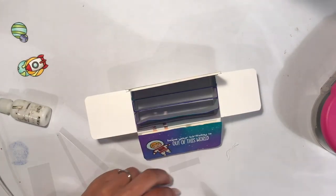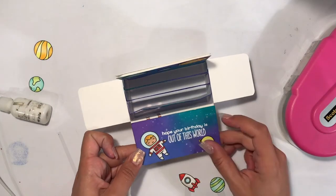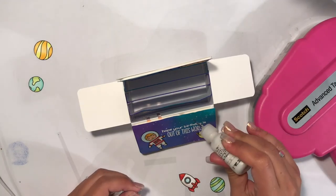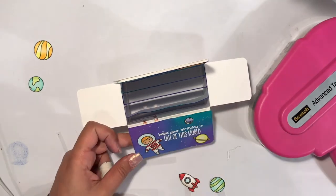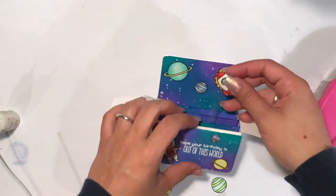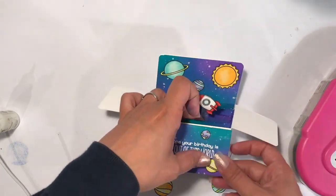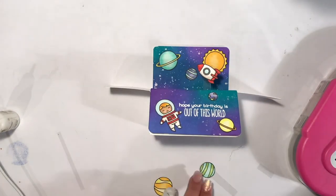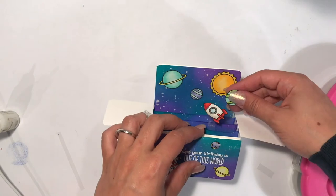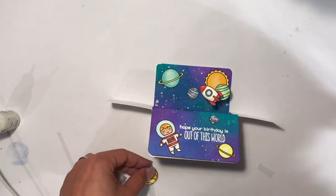To glue down all my images I like to use my ATG gun because I don't really like liquid adhesive. Just for the tiniest planet I'm using my Multi Matte Medium from Ranger. I adhered all the floating images on top of the acetate and now I'm just arranging them in the box.